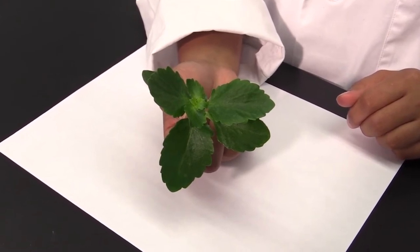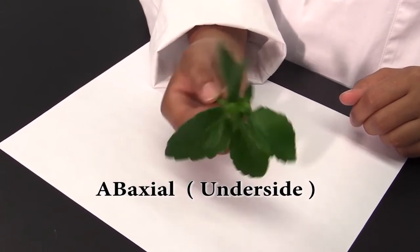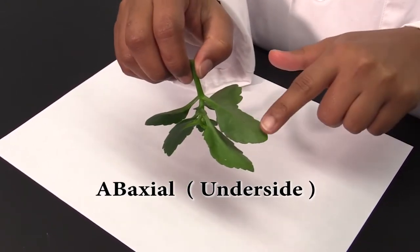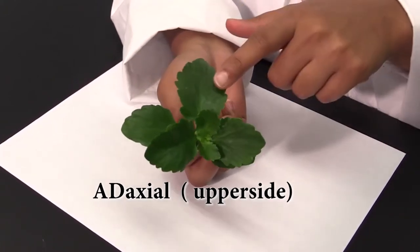Before you begin Part C, it's important to understand the ab-axial, which is the underside of the leaf, and the ad-axial, which is the upper side of the leaf.